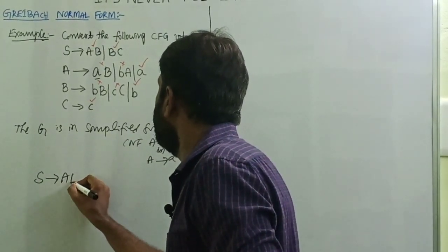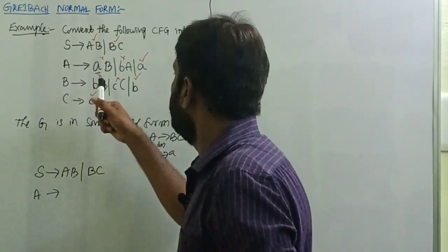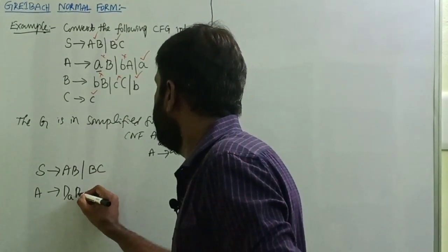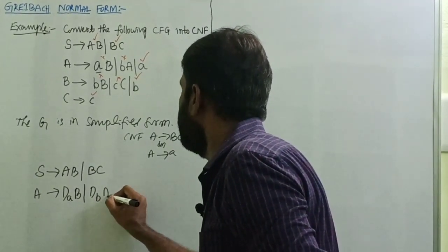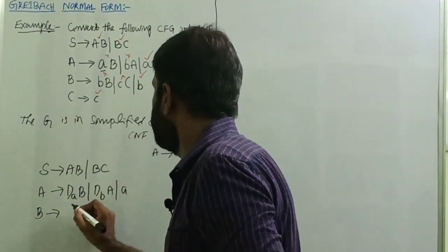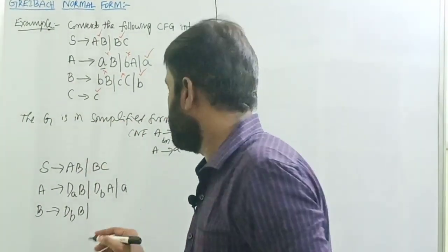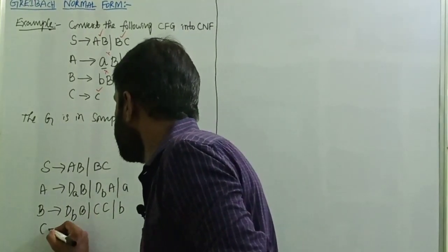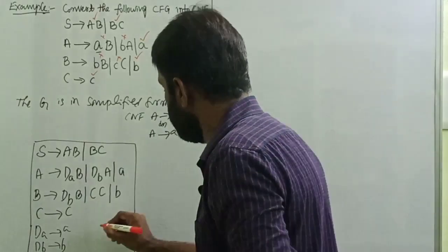S tends to AB slash BC. For A, since it is not in Chomsky Normal Form, we introduce new non-terminals: DA and DB. A tends to DA B slash DB A slash A. For B: B tends to DB B slash CC slash BC. We introduce DA and DB. C tends to c. DA tends to A, DB tends to B. The entire grammar is now in Chomsky Normal Form.